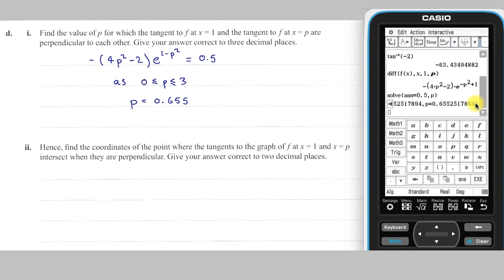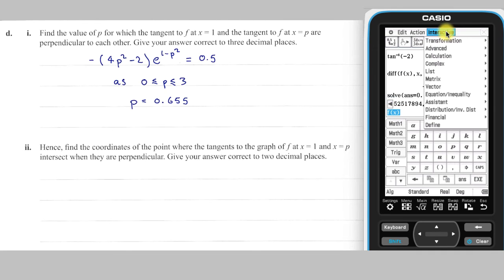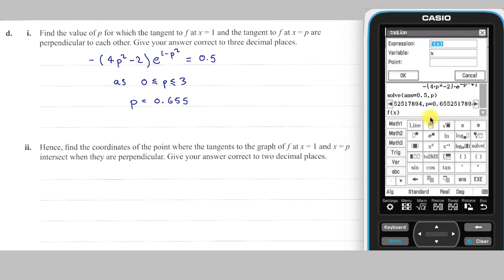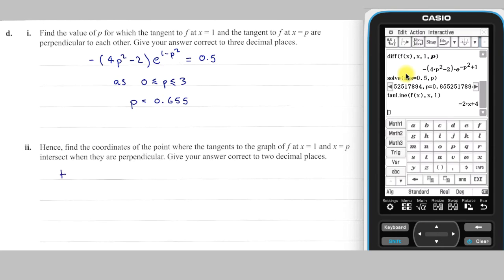Part d, part 2: To answer this question, I'll first find the equation of the tangent to the graph of f at the point where x = 1, and also at the point where x = 0.655, the value I found in part 1. I'll do that using the ClassPad's tan line command. This command can be duplicated and edited to obtain the tangent at the point p found previously.